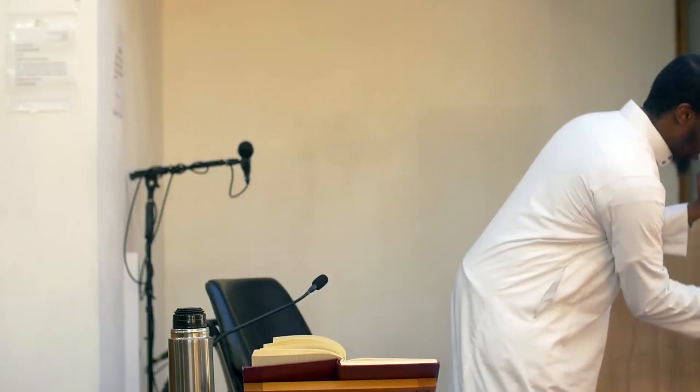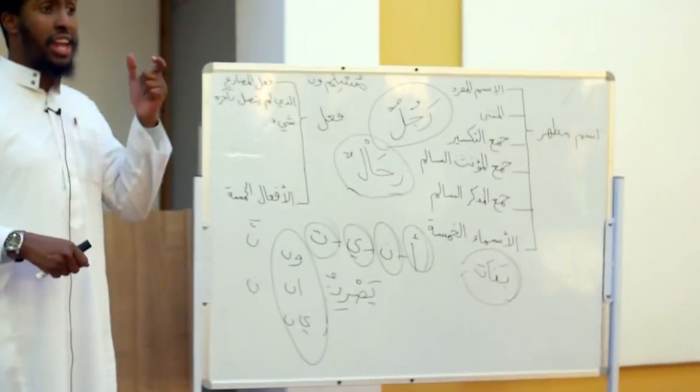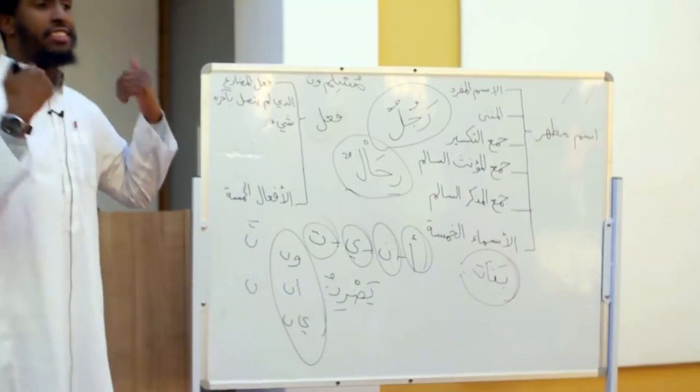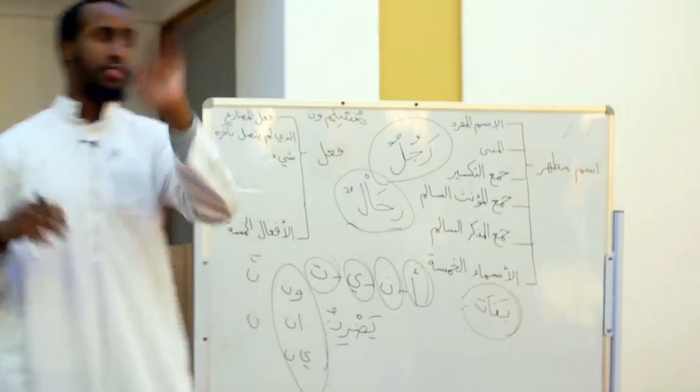The asal is that Fi'l al-Mudari' is mu'rab. The times that it becomes mabni are: if Nun al-Tawkid enters it, or Nun al-Niswa. For example, وَالْوَالِدَاتُ يُرْضِعْنَ — the word yurdi'na is mabni. So if it's saved from all of those — the three pronoun endings and the two nuns — that's what's meant by al-Fi'l al-Mudari' al-ladhi lam yatasil bi-akhirihi shay.